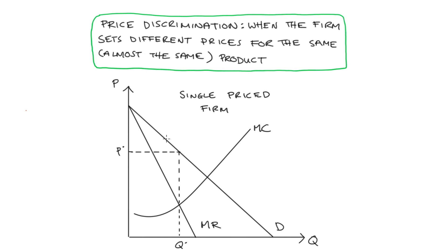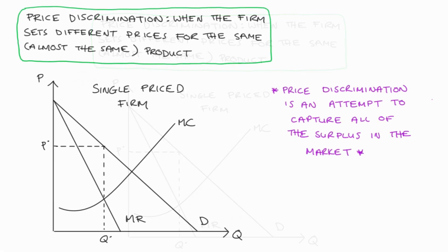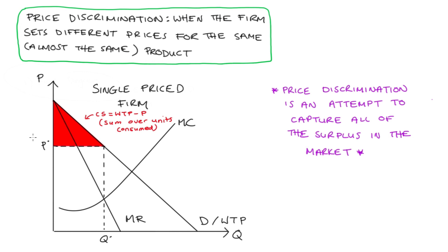Now, this is actually a good place to introduce a second interpretation of price discrimination. So price discrimination as an attempt by the firm to capture as much surplus in the market as possible. So for our firm who is only charging one price here, our consumer surplus would be this red area here. This area sums up the difference between our willingness to pay and the price for all of the units consumed. Producer surplus will be the green area here. This is price minus marginal cost for all of the units produced.